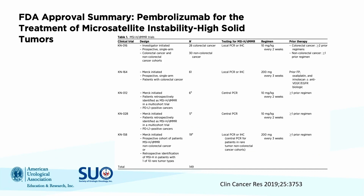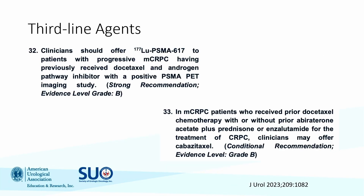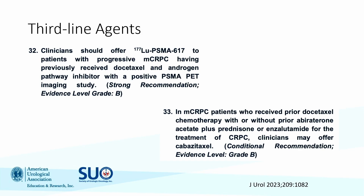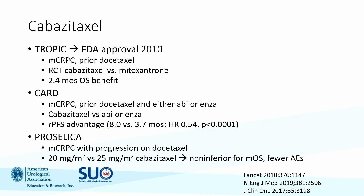Third-line agents include lutetium for patients with metastatic CRPC with prior docetaxel and novel hormonal therapy and PSMA PET-positive lesions, and cabazitaxel. The VISION trial showed improvements in image-based progression-free survival as well as overall survival with lutetium. Cabazitaxel is a later option for patients with metastatic CRPC, highlighted by three important studies.